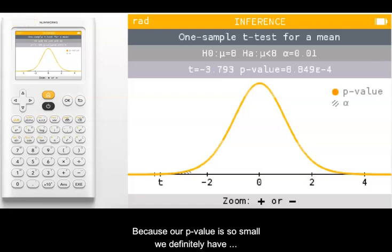Because our p-value is so small, we definitely have enough evidence to reject the null hypothesis and conclude that the mean hours of sleep is less than 8 hours.